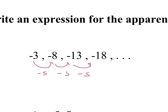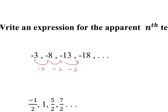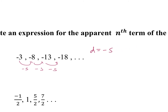So our d is negative 5. For our arithmetic sequence, we have a_sub_n is equal to our zero term plus d times n. So negative 5n.